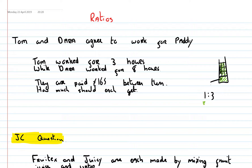So for every one part of dilute you have, you have three times that amount of water. So if I put in 20 millilitres of dilute, I'd have three times that amount — so 60 millilitres of water. Because in this drink, the amount of water has to be three times bigger than the amount of dilute.